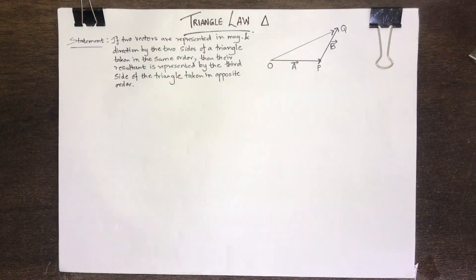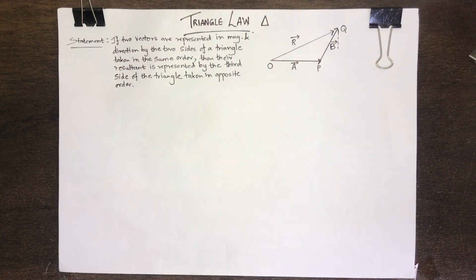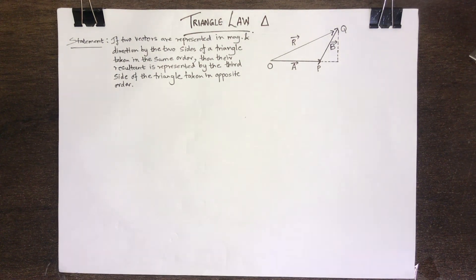To find the magnitude of the resultant R, we draw perpendicular QE from Q on the side OP produced.